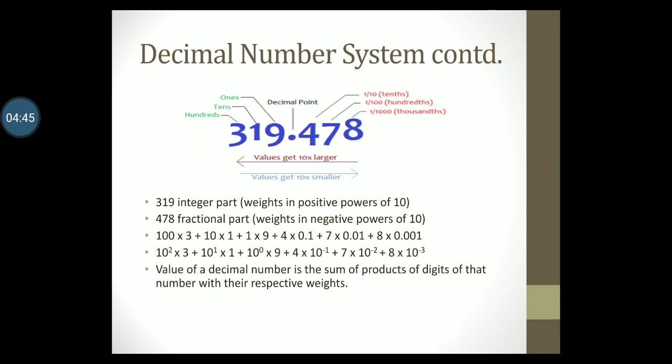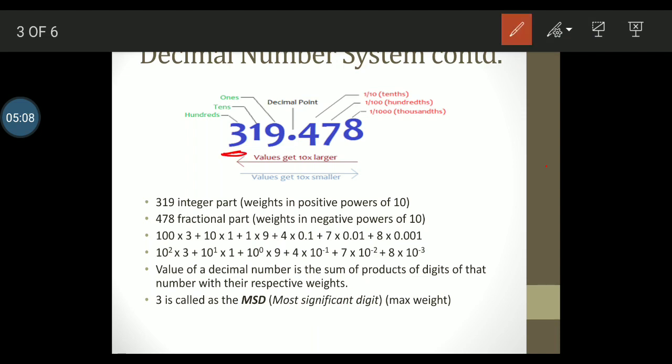The value of the decimal number is the sum of the products of digits of that number with their respective weights. What I mean to say is that if you add up all these values, you will get the number 319.478. 3 is called the most significant digit or MSD because it has the maximum weight associated with it. Similarly, 8 is called the LSD or the least significant digit because it has the minimum weight associated with it, that is, 10 raised to -3.